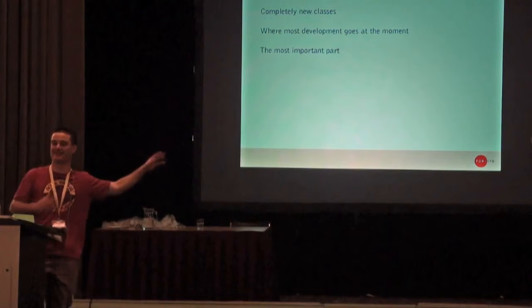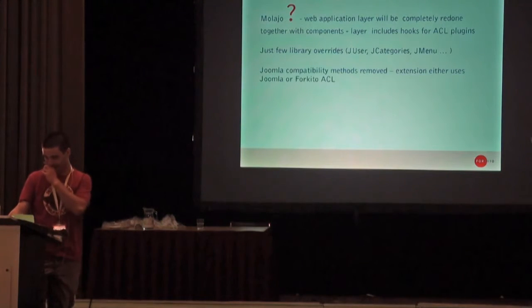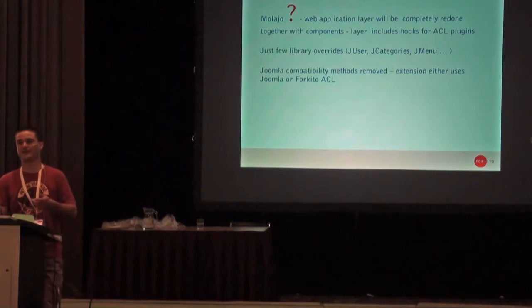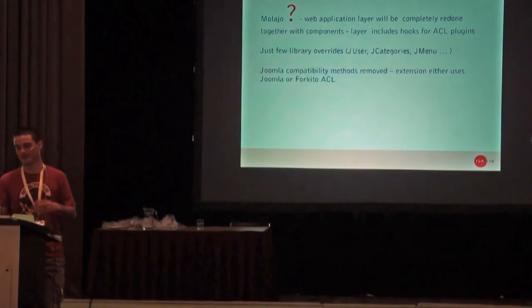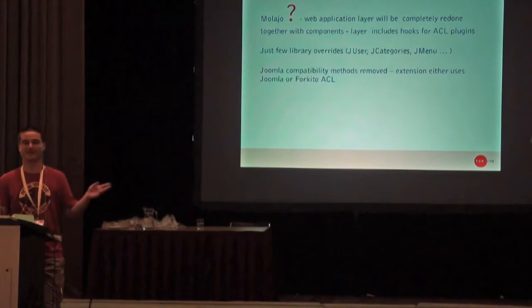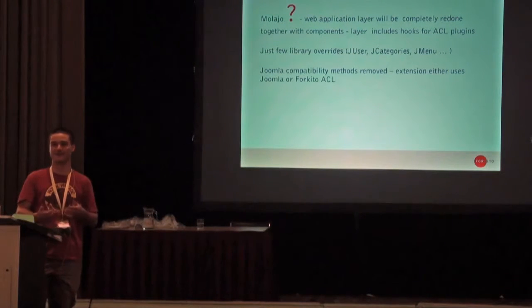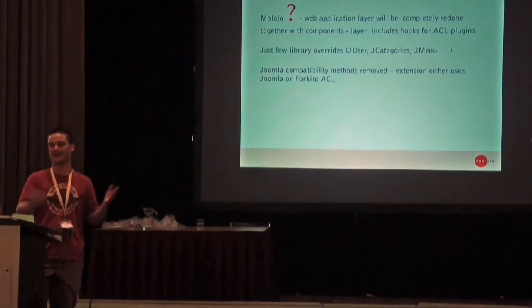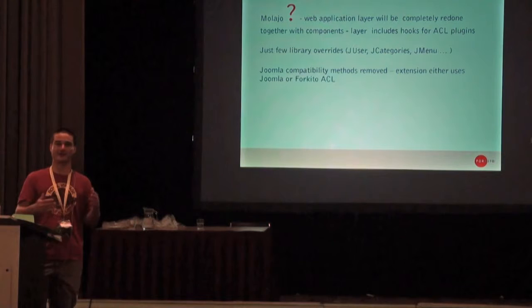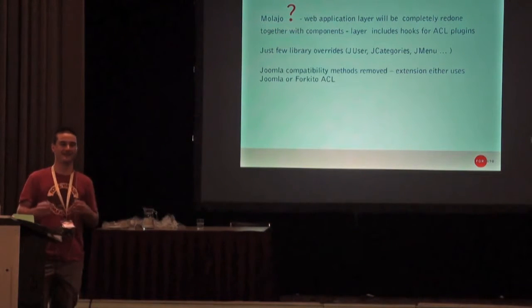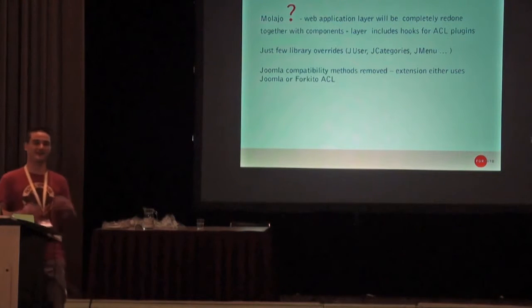For any of you who weren't at the first session: we are actually redoing the whole web application layer built upon a freshly released Joomla library. All components — com_content, com_users, etc. — will be redone. This system includes pluggable ACL compatibility. One of these plugins will be this ForKeto ACL, another will be compatible with the Joomla one, and it will enable any ACL to work with the system — because it will have calls like 'is user allowed to do something' and the ACL will just provide an answer.